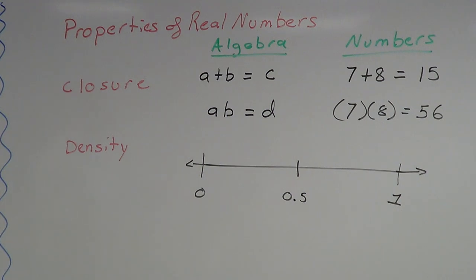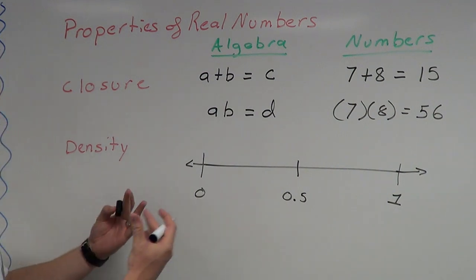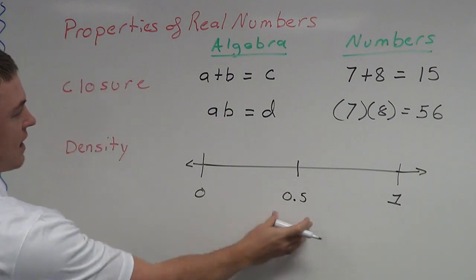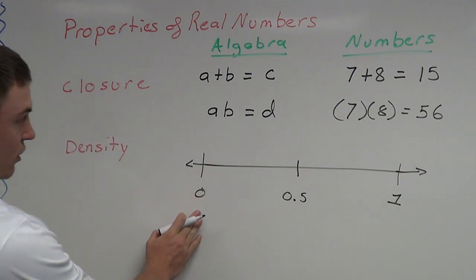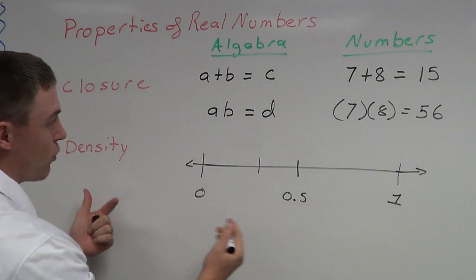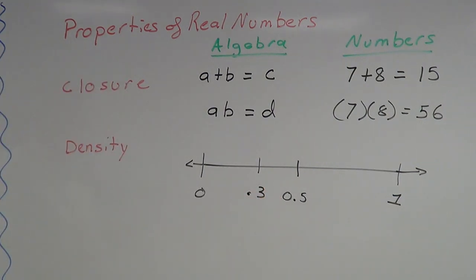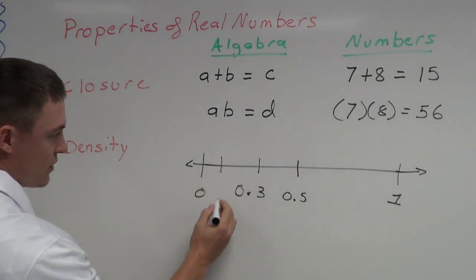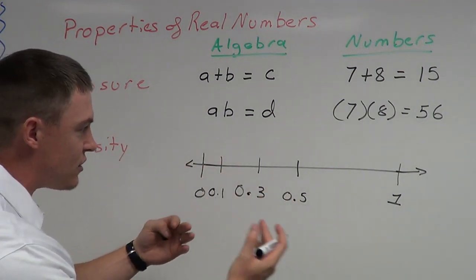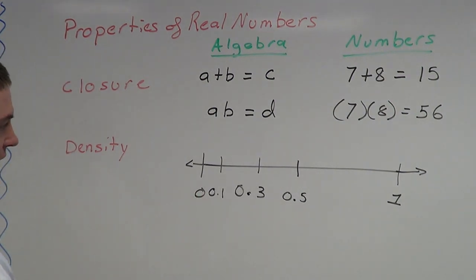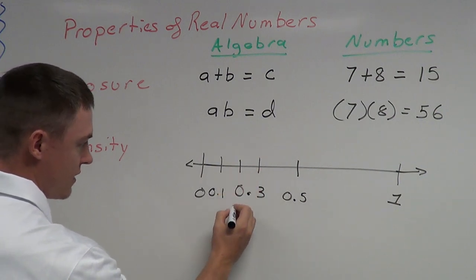You can keep going with the density property. If I choose 0 and 0.5 as my two new real numbers, there's always going to be a real number between them — for example, 0.3. And I can continue: between 0 and 0.3 is 0.1. I can keep going — between 0.1 and 0.3 is 0.2. It doesn't matter how close the numbers are; I can always find a real number in between.